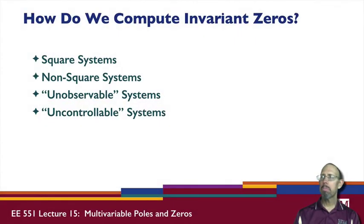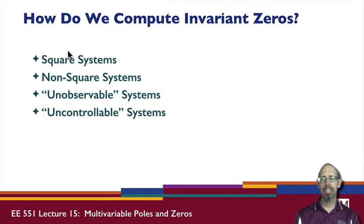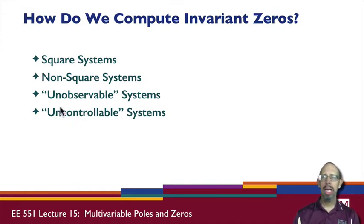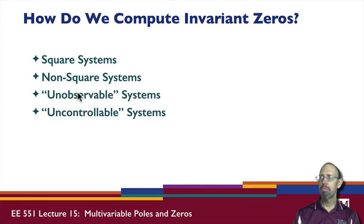So how do we compute invariant zeros? How do we find a lambda that makes that happen, and the direction? We have different cases: square systems and non-square systems. We're also going to look at observable and uncontrollable systems, and come back later to discuss what controllability and observability really mean.